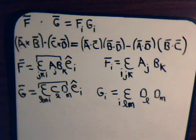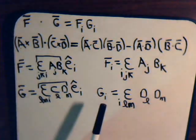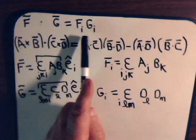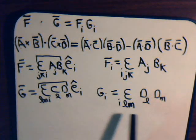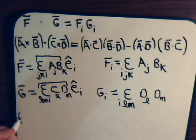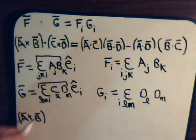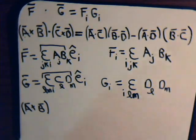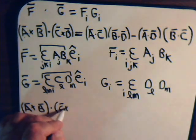Now, we're saying that this dot product in component form is F sub I times G sub I. This is F sub I, this is G sub I. So what we're saying is that A cross B dot C cross D